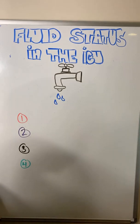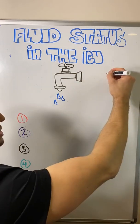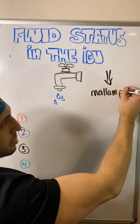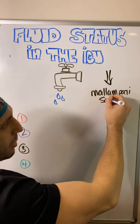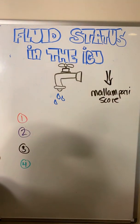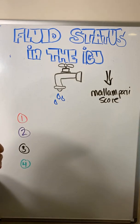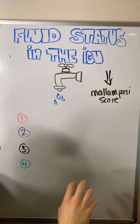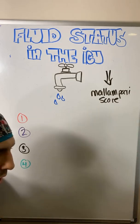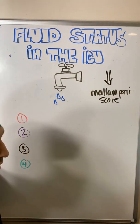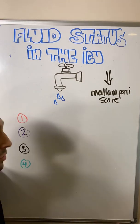When discussing fluid status, I equate it to doing a Mallampati score. Your Mallampati score is the test where you look inside someone's mouth, have them open up, stick their tongue out, and look at the back of the airway. When we do our airway evaluation and perform our Mallampati score, even though it's the big thing that's taught, it's really just one aspect of the larger picture.